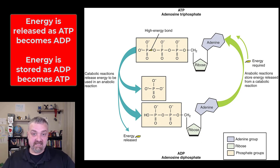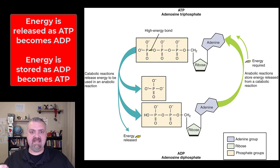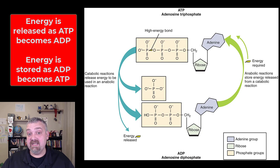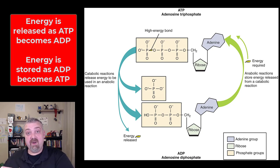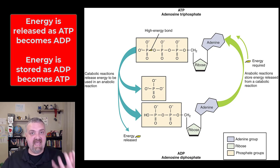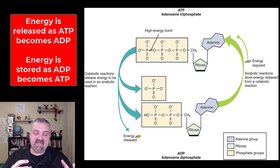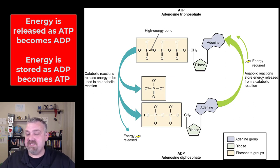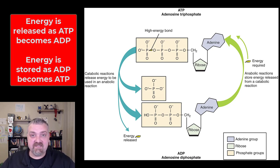So here we see ATP becoming ADP. ATP is our primary energy currency. As ATP releases that third phosphate and releases the energy that was in that bond, that's what allows us to do work, and then it becomes ADP. When we have more energy, we can use that energy in our electron transport system to take ADP and reattach that third phosphate, making ATP. This happens constantly. In the unit on muscle metabolism, I'll also show you where something called creatine phosphate comes into play.